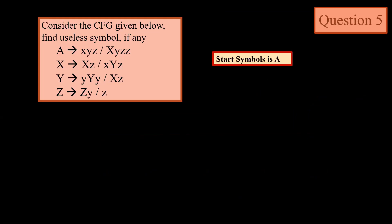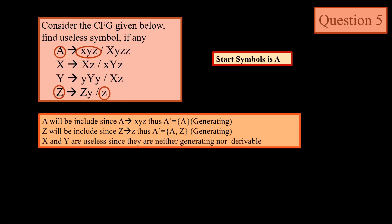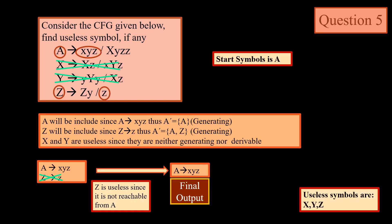Now comes removal of useless symbols for non-terminals. Here the start symbol is A. The rules for removing useless symbols are: first is generating, and second is derivable. A will be included since A → xyz, so A′ will have A. A is generating. Then Z will be included since Z → z, which is generating. X and Y are neither generating nor derivable, so they are useless symbols. The grammar left is A → xyz and Z → z. But Z is useless since it is not reachable from A. So ultimately Z is removed and we get only A → xyz. The useless symbols are X, Y, and Z.